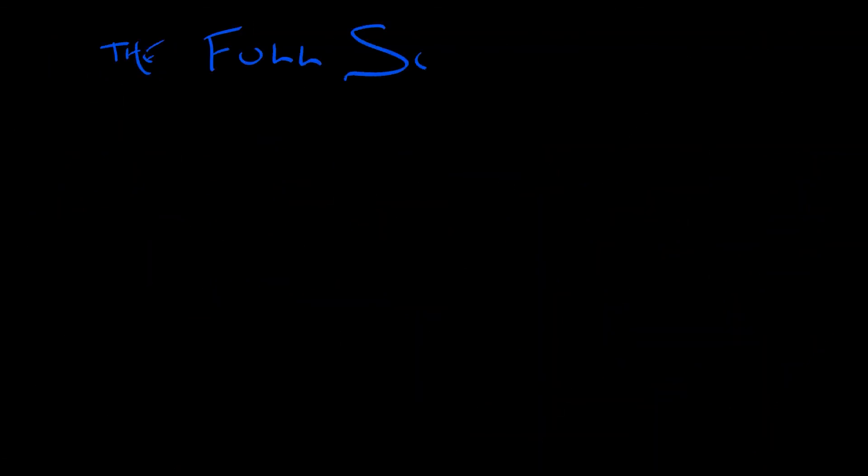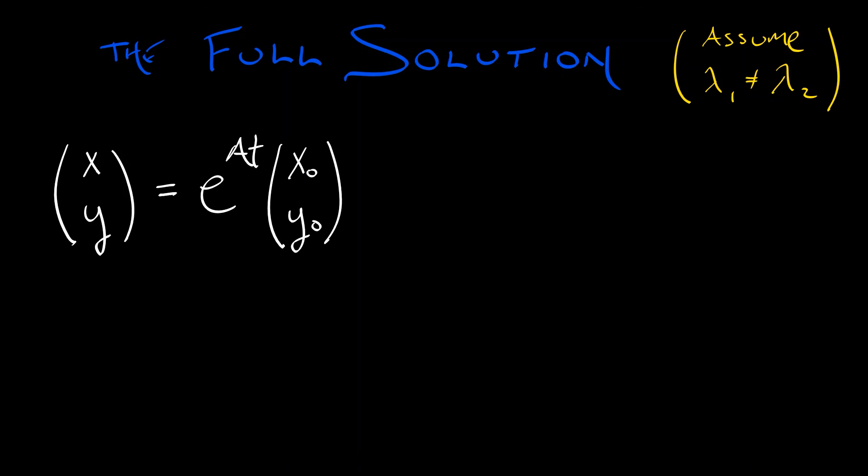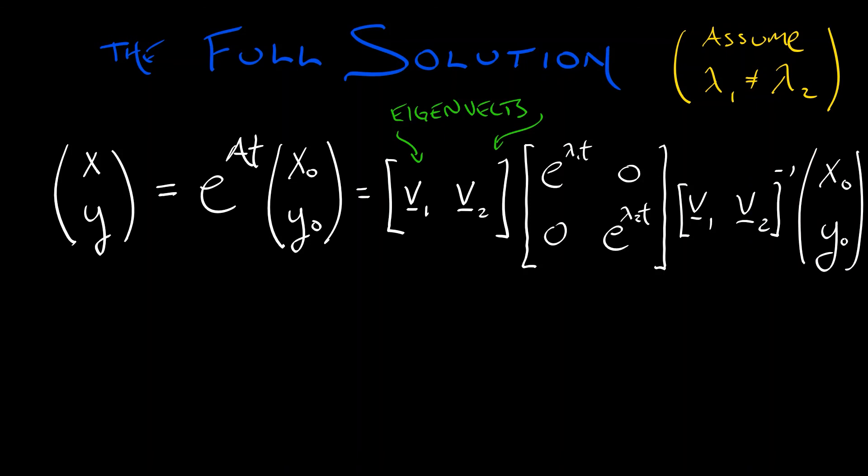The full solution to this matrix system, assuming that we have distinct eigenvalues lambda 1 and lambda 2, is going to be the following. x and y is going to be e to the a t applied to the initial condition x naught y naught. Now what's the exponential of a times t? Of course, we take the matrix whose columns are v1 and v2, the two corresponding eigenvectors to lambda 1 and lambda 2, times the exponentiated diagonal matrix. That's e to the lambda 1 t, 0, 0, e to the lambda 2 t. And then I take that matrix of eigenvectors and I take the inverse of that. All that multiplied together and then applied to the vector of initial conditions x naught and y naught.